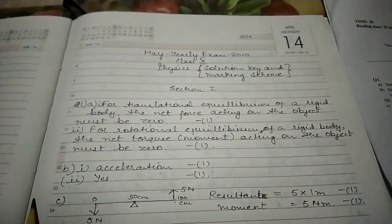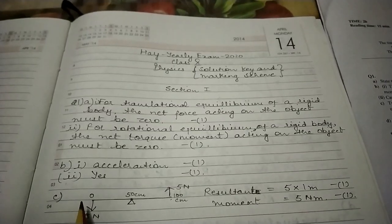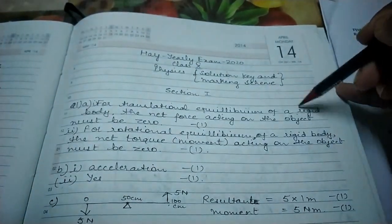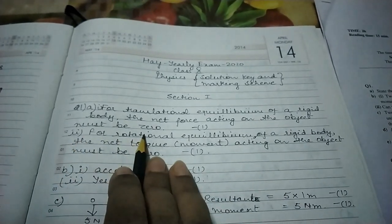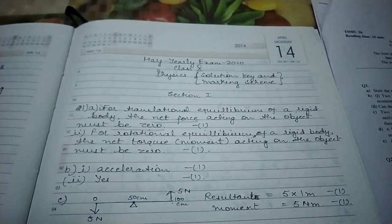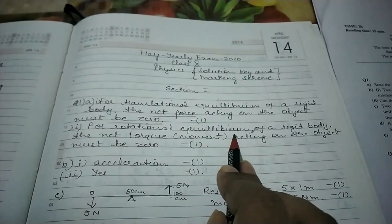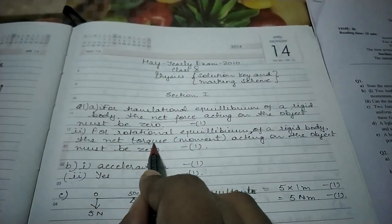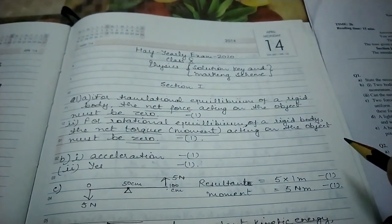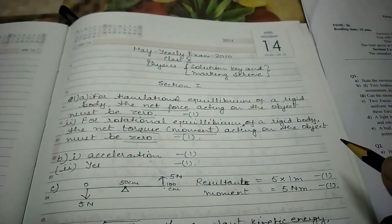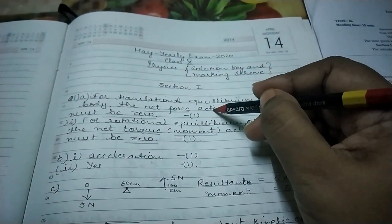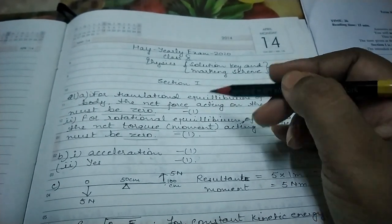Both points for a body staying in equilibrium must be written. First, for translational equilibrium of a rigid body, the net force acting on the object must be zero. Second, for rotational equilibrium of a rigid body, the net torque or moment acting on the object must be zero. The keywords 'net force' and 'zero' are required; missing them will cost you one mark each.